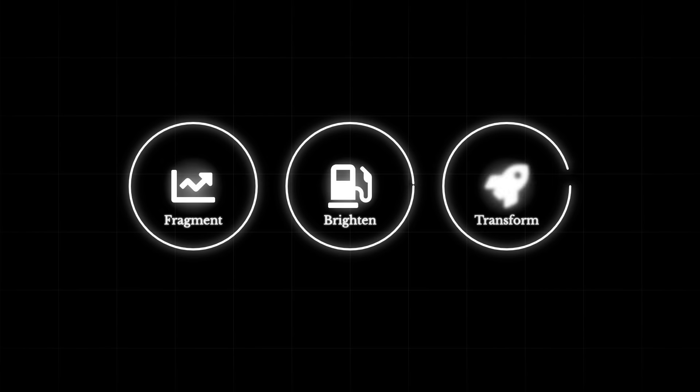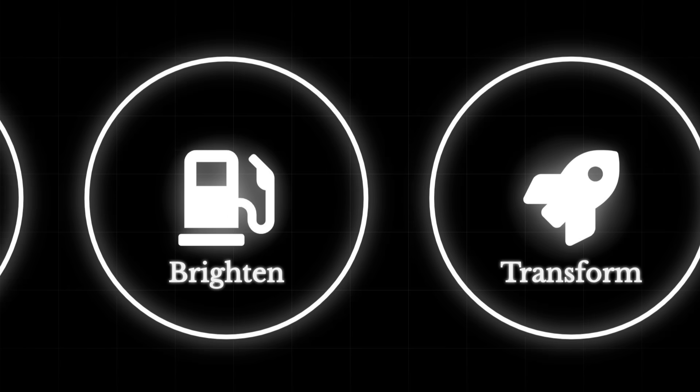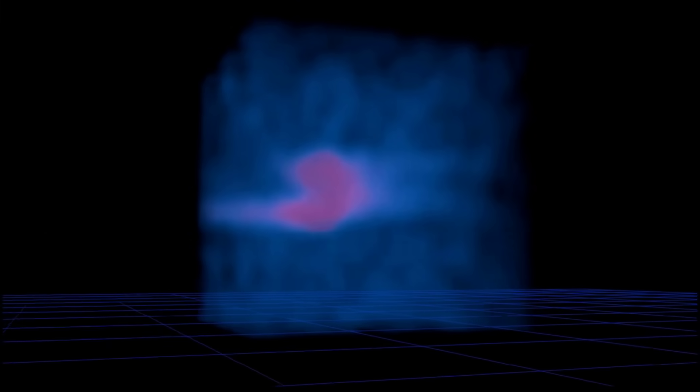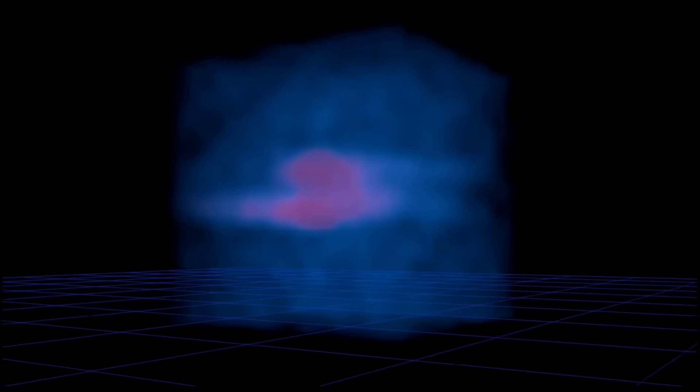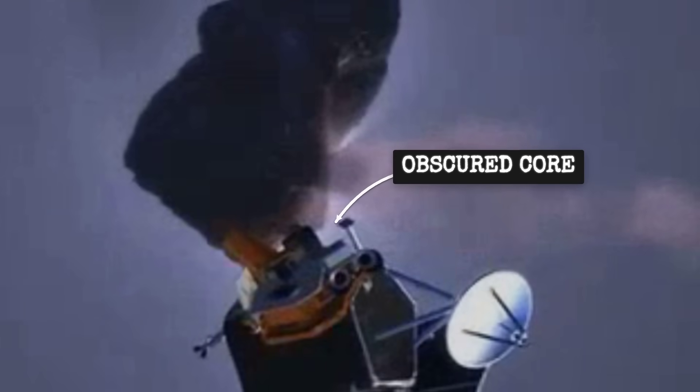If the object is going to fragment, brighten dramatically, or undergo any unexpected changes, this is when it would happen. The increased solar radiation will cause maximum outgassing of volatiles, potentially expanding the coma to even larger dimensions than we've already observed.